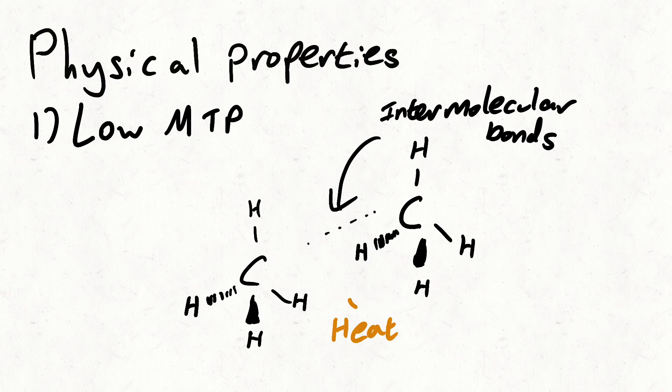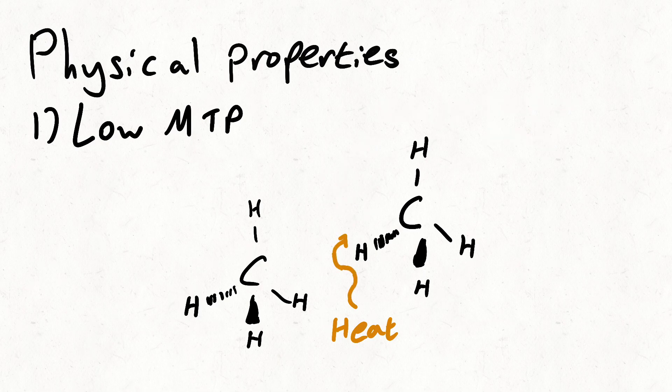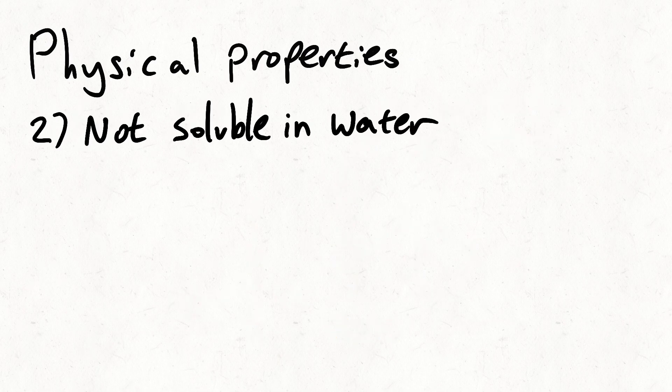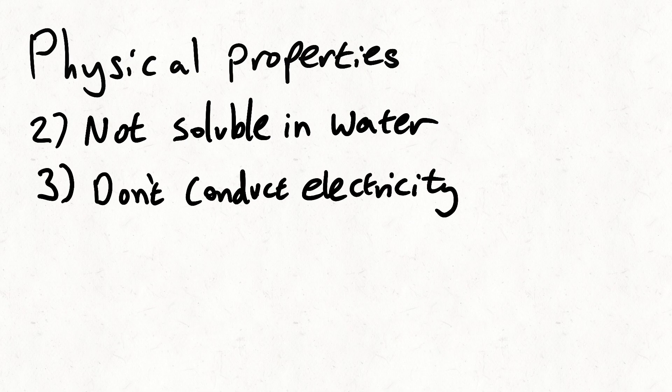Covalent compounds have low melting points since these molecules are joined together by intermolecular bonds which are very weak. They're also mostly not soluble in water since they're neutral and can't interact with the water molecules. Because they're neutral, they do not conduct electricity.